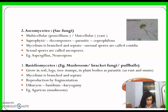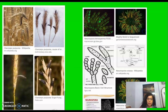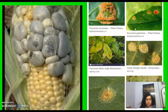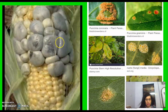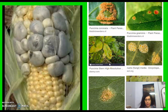Examples of Basidiomycetes are Agaricus (mushroom), Ustilago (smut), and Puccinia (rust), which we talked about as rusts.